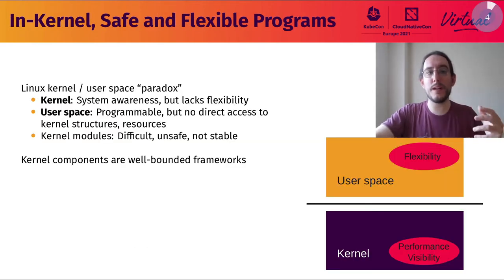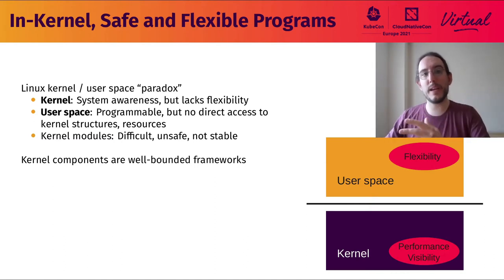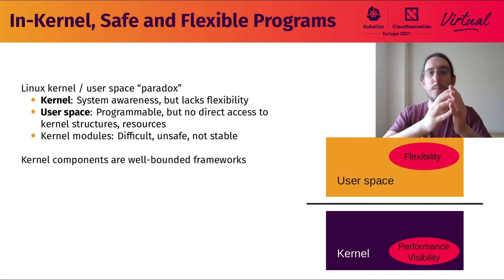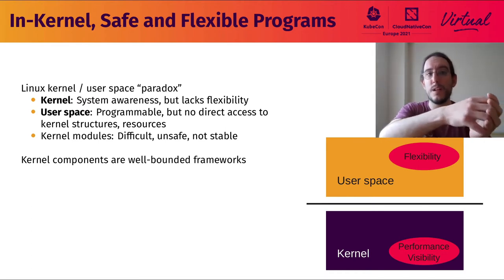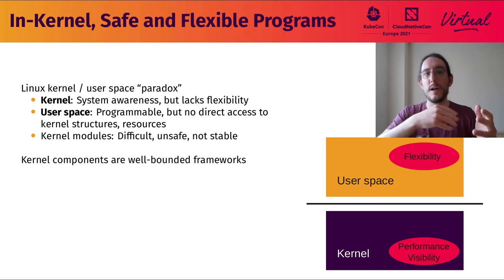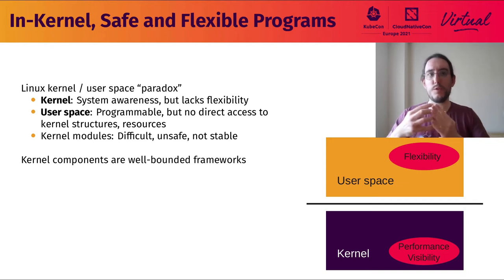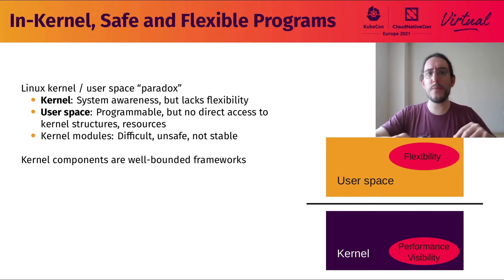To really understand that, let's observe that the Linux system is being used as the basis for everything in cloud environments nowadays. We have something of a paradox with Linux because everything that allows you to get observability — to understand what resources are used by a given process or pod — is happening on the kernel side, but you have very little flexibility in the kernel. You are free to program whatever you want in user space, but in user space you won't get direct access to those kernel data structures.